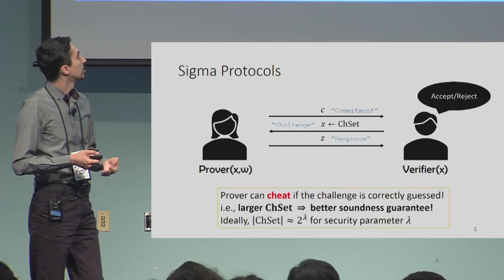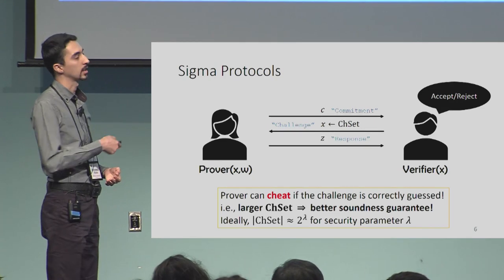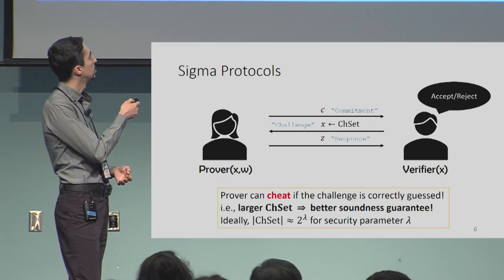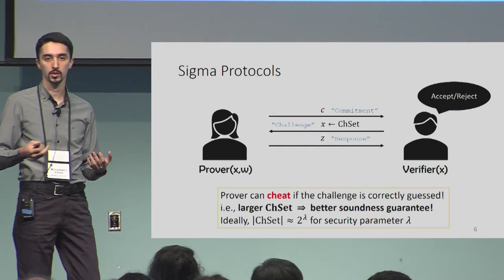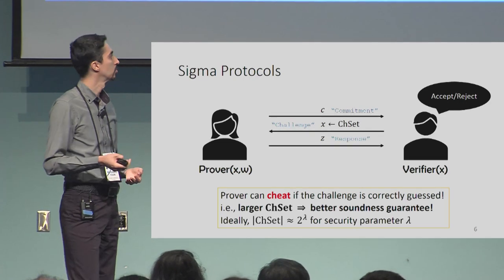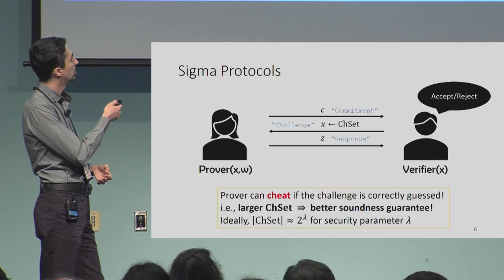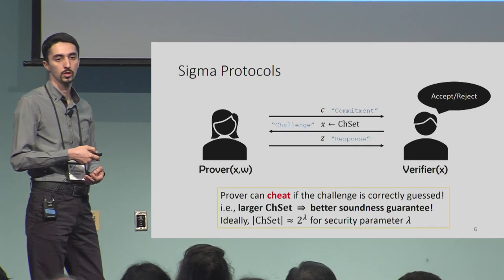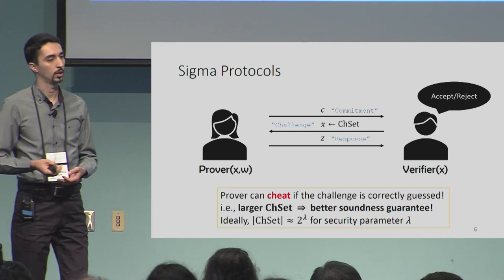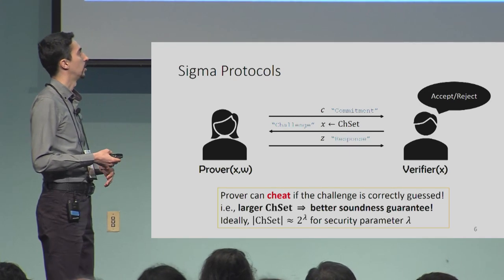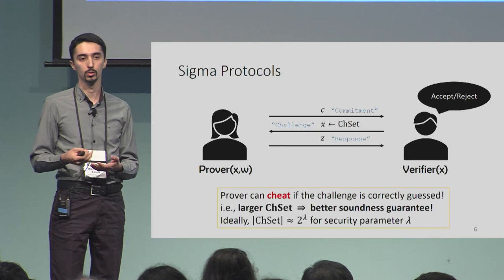If the prover can guess the challenge x in advance, he can prepare the commitment in a way that the verifier always accepts, whether the statement is true or not, whether he knows the witness or not. So the larger the challenge set you choose, the better soundness guarantee you get. Ideally you want a challenge set of size something like 2 to the power of 128 or 256.